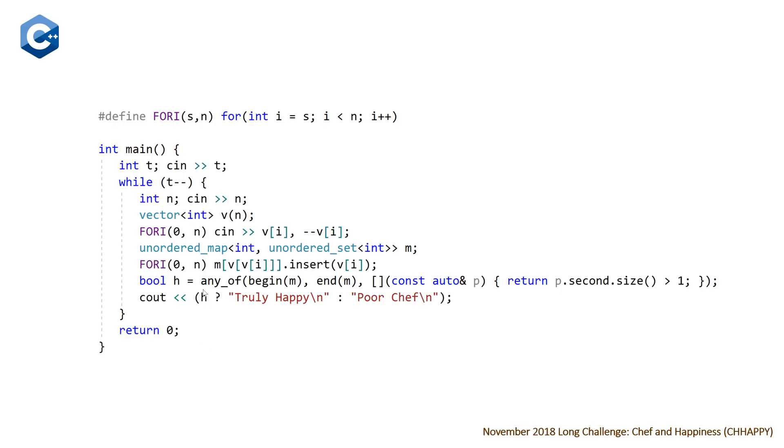And so once you've done this, we can just use our any of algorithm to check that any of the hash sets in our key value pairs in our hash map have a size greater than one, which will represent that we have two elements where the values are not equal, but that lead to two other elements where the values are equal. And this will give us a Boolean. And if the Boolean is true, we're going to output truly happy, else we're going to output poor chef.